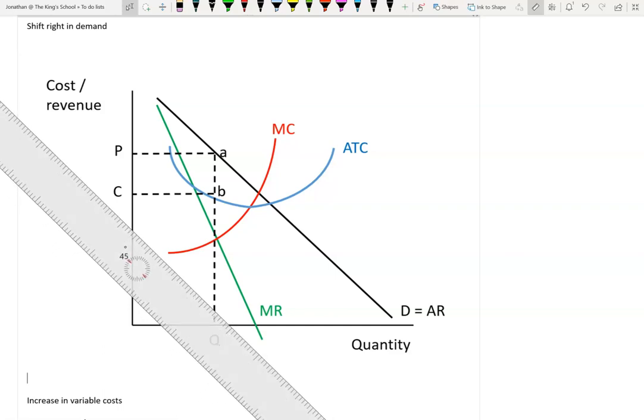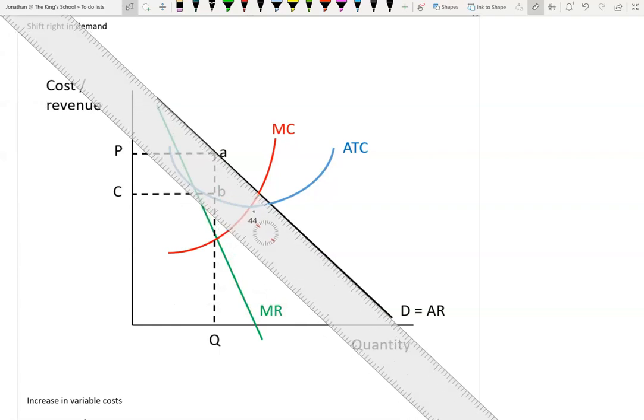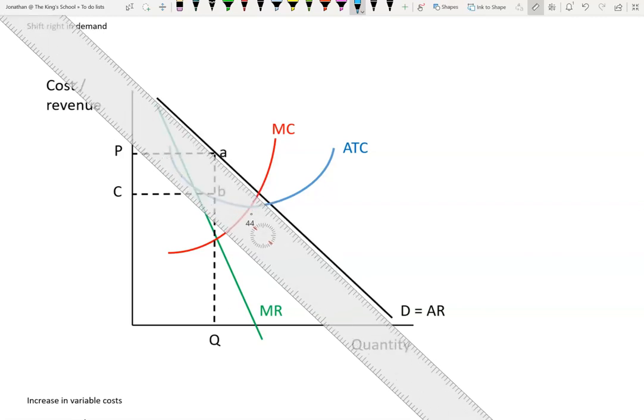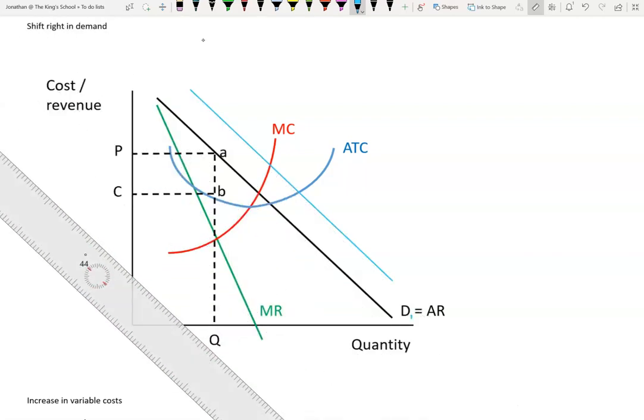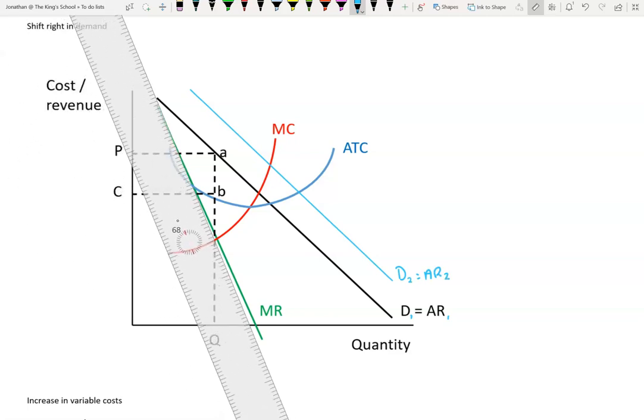Right, first thing we're going to do is look at a shift right in demand if a company has an increase in demand for its product and an increase in revenue. So first thing to say is that you have to shift your lines to the right. It's really important that lines are shifting to the right and parallel. So for this line, it's quite good because I've got a ruler which I can then move across. I'm not going to move it too far. If you move your lines too far, you're going to end up with strange situations which may not be easy to analyze.